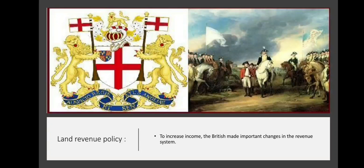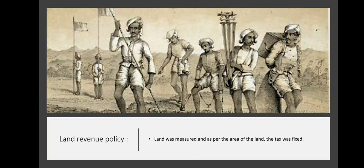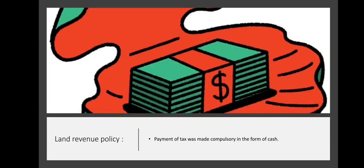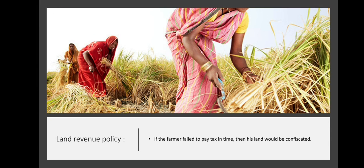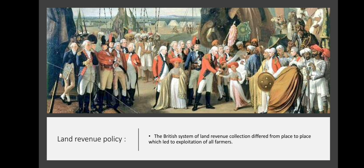To increase income, the British made important changes in the revenue system. Land was measured and, as per the area of land, the tax was fixed. Payment of tax was made compulsory in the form of cash. If the farmer failed to pay tax in time, his land would be confiscated. The British system of land revenue collection differed from place to place, which led to exploitation of all farmers.